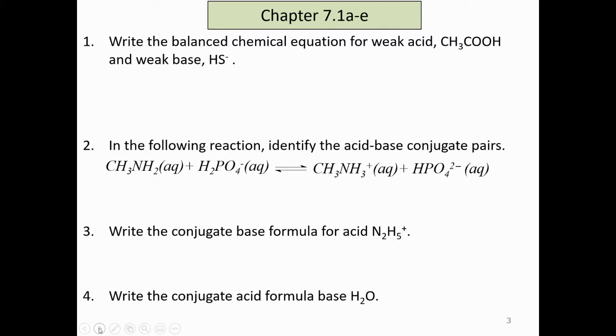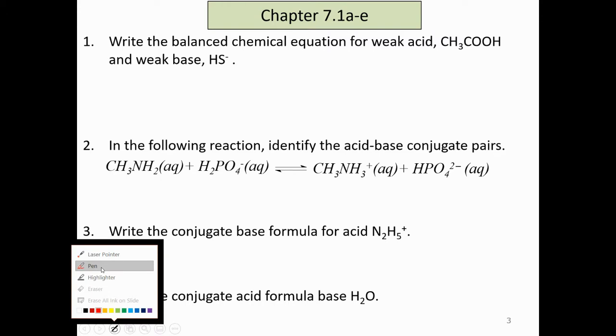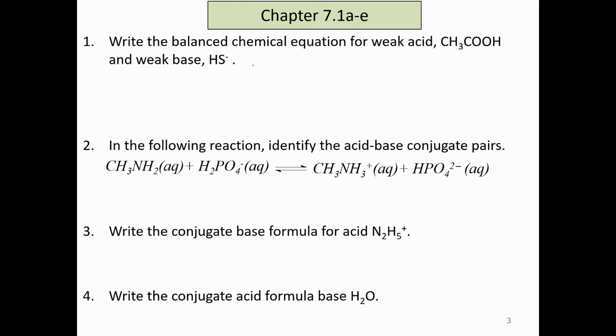Now today we continue with the exercise of how to write chemical equations, reversible equations for weak acid and weak base. Now we write for weak acid: CH3COOH. Remember, write down the reversible arrow, and then it will dissociate partially in water, H2O.